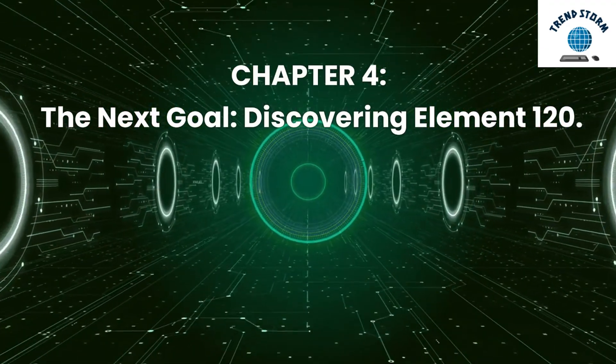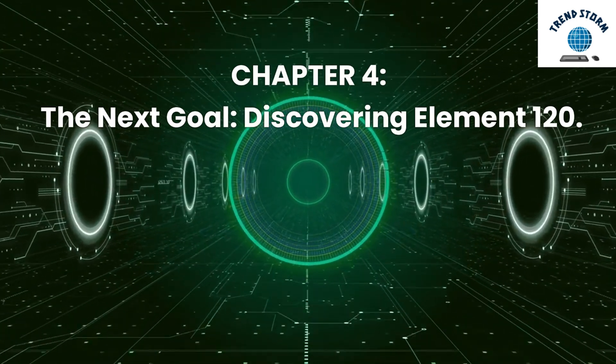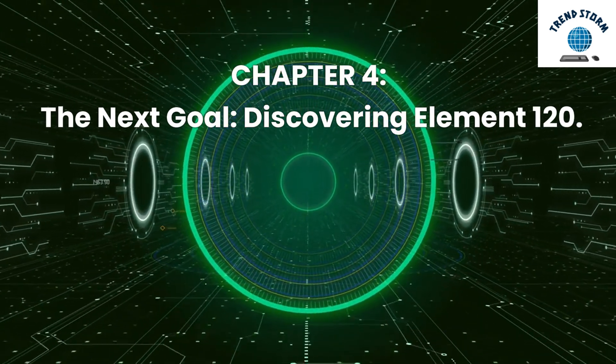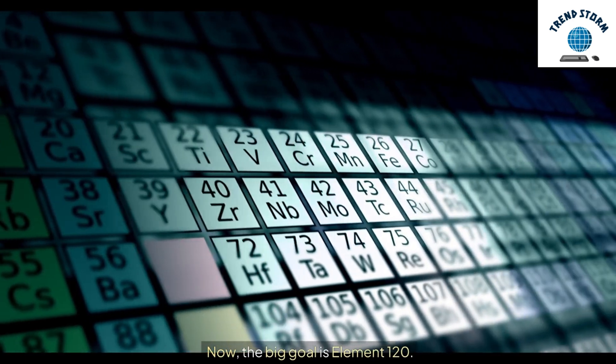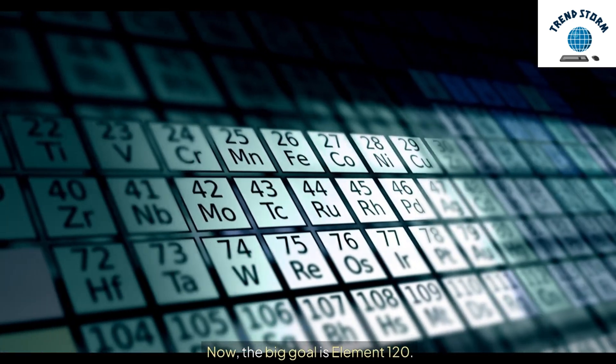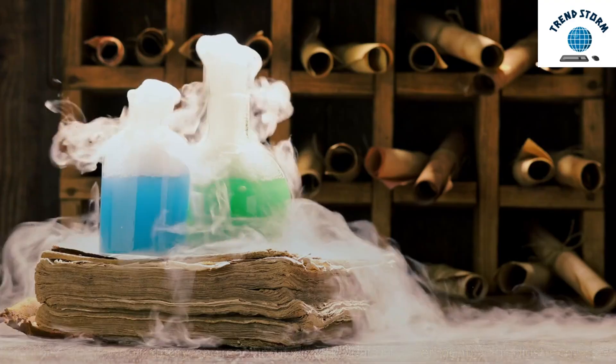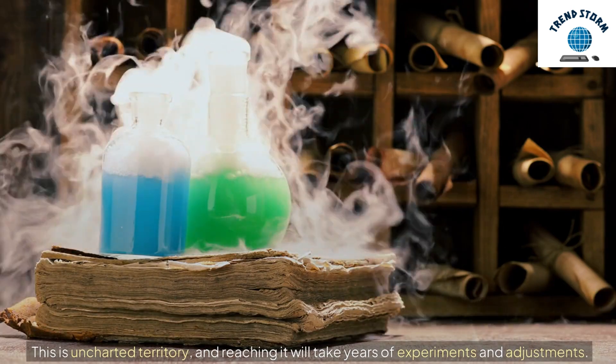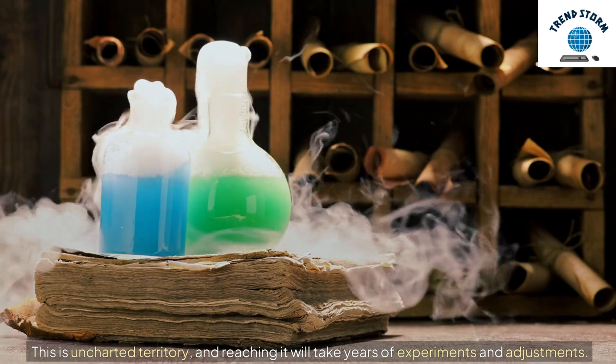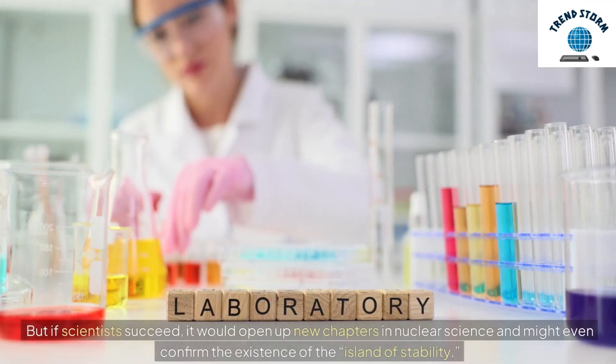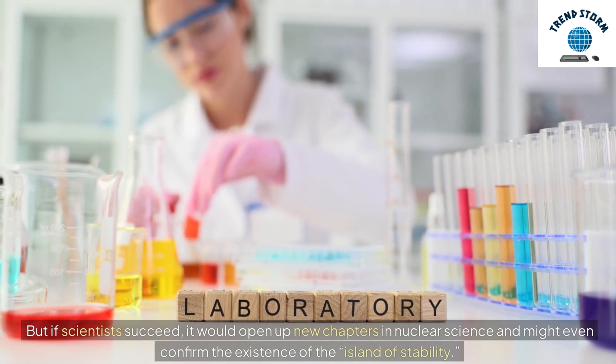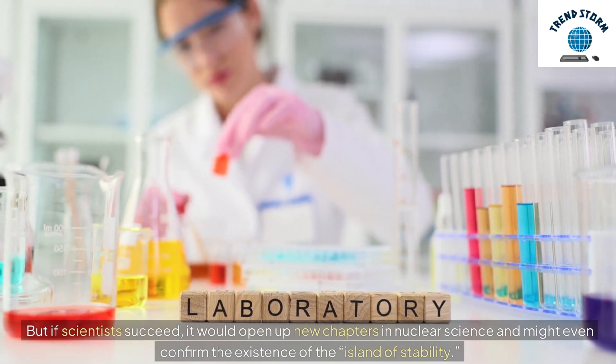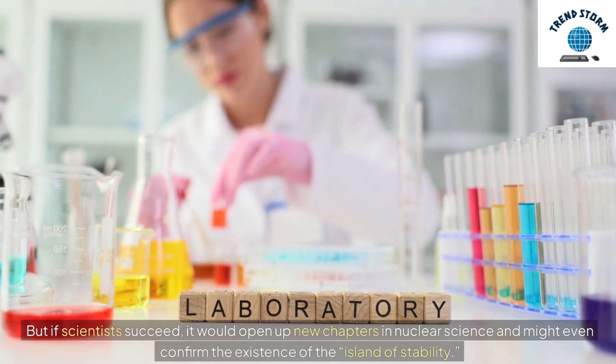Chapter 4. The next goal. Discovering element 120. Now, the big goal is element 120. This is uncharted territory, and reaching it will take years of experiments and adjustments. But if scientists succeed, it would open up new chapters in nuclear science and might even confirm the existence of the island of stability.